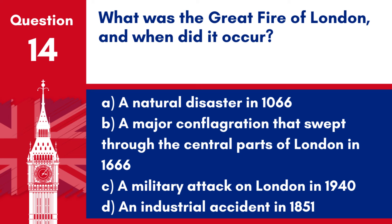Question 14. What was the Great Fire of London and when did it occur? a. A natural disaster in 1066. b. A major conflagration that swept through the central parts of London in 1666. c. A military attack on London in 1940. d. An industrial accident in 1851.